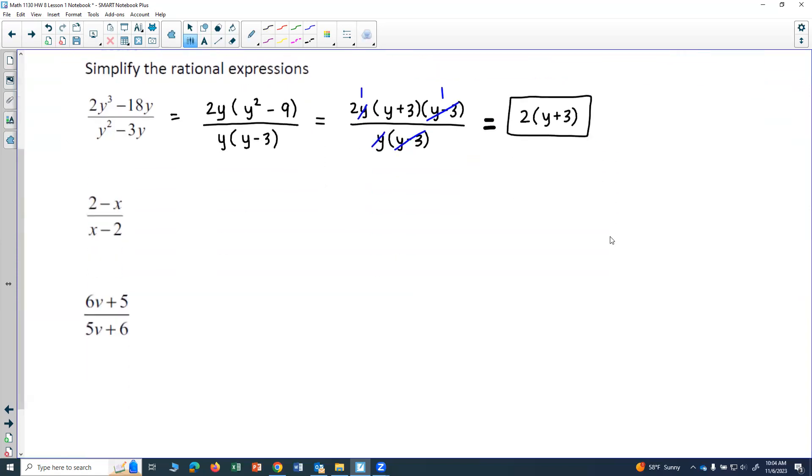Let's try another one. We have 2 minus x over x minus 2. Now right now, they look very similar, but they're not exactly the same. If I wanted to make them look exactly the same,